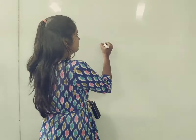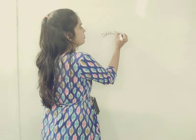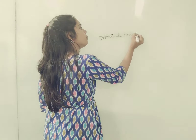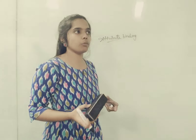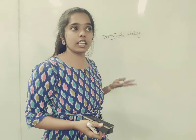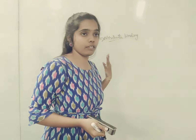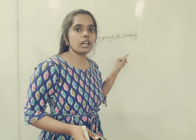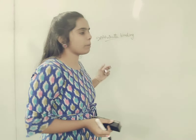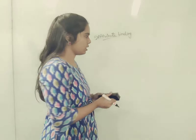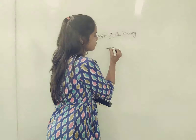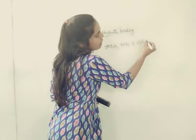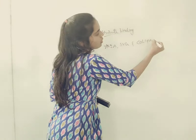Next is attribute binding. We use attribute binding when there is no element property to bind. Then we have to choose attribute binding. It is applicable to only the purest attributes such as aria, SVG, and colspan. These are the pure attributes.